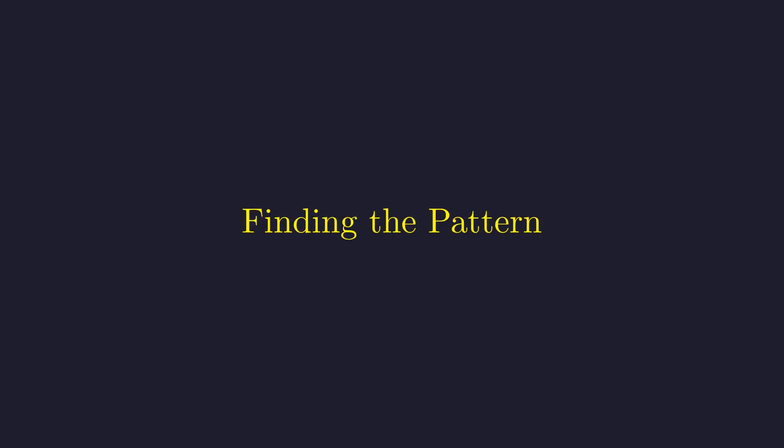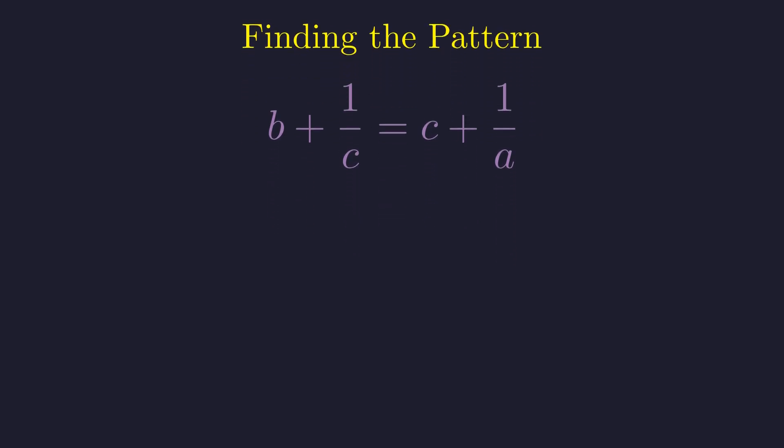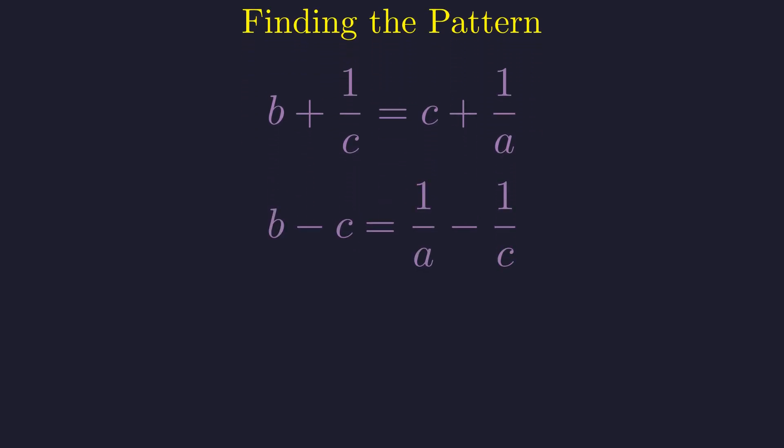Now let's see what happens with the other pairs. A pattern is about to emerge. Taking the second and third parts of the original equality, we can apply the exact same logic. We group the variables B and C on one side and their reciprocals on the other, and combining the fractions gives us this second relationship.